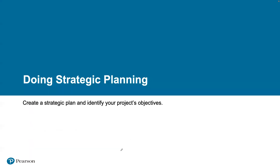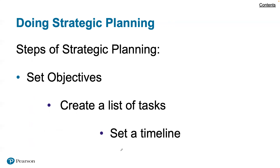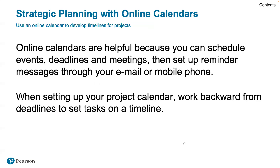Now that you have an idea, the next thing to focus on is coming up with a strategic plan. The three steps are: first, setting the objectives — what is it that you want to do? Second, create a list of tasks required to meet those objectives. And finally, set a timeline. All of those are going to be key. If you have that set up in a convincing package, you're going to get a lot of interest from management.